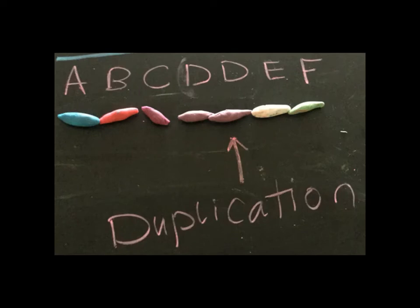The first mutation we'll cover today is a duplication. As you can see from the picture, I have duplicated the D gene. So, I have two copies of the D gene. Basically, what happens here is that one of the genes accidentally gets copied.